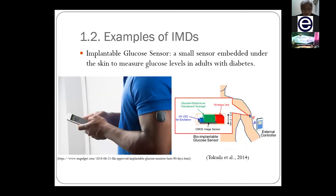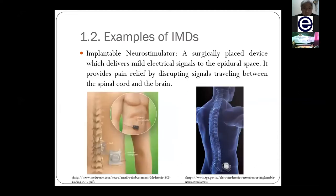Another common IMD, especially for diabetes patients, is the implantable glucose sensor. It is used to sense the sugar level in our body. If the sugar level drops to a very low level, this implantable glucose sensor will actually pump insulin into our body. A condition where the sugar level is too low is known as hypoglycemia.